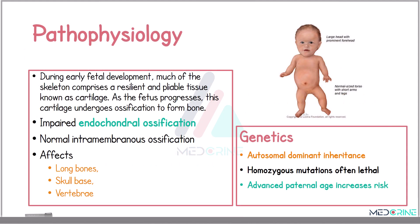In the pathophysiology of achondroplasia, during early fetal development much of the skeleton comprises a resilient and flexible tissue known as cartilage. As the fetus progresses, this cartilage undergoes ossification to form bone. In achondroplasia, there is impaired endochondral ossification due to a mutation of the fibroblast growth factor receptor 3 gene. These children present with normal intramembranous ossification, and achondroplasia primarily affects the long bones, the skull base, and the vertebrae.